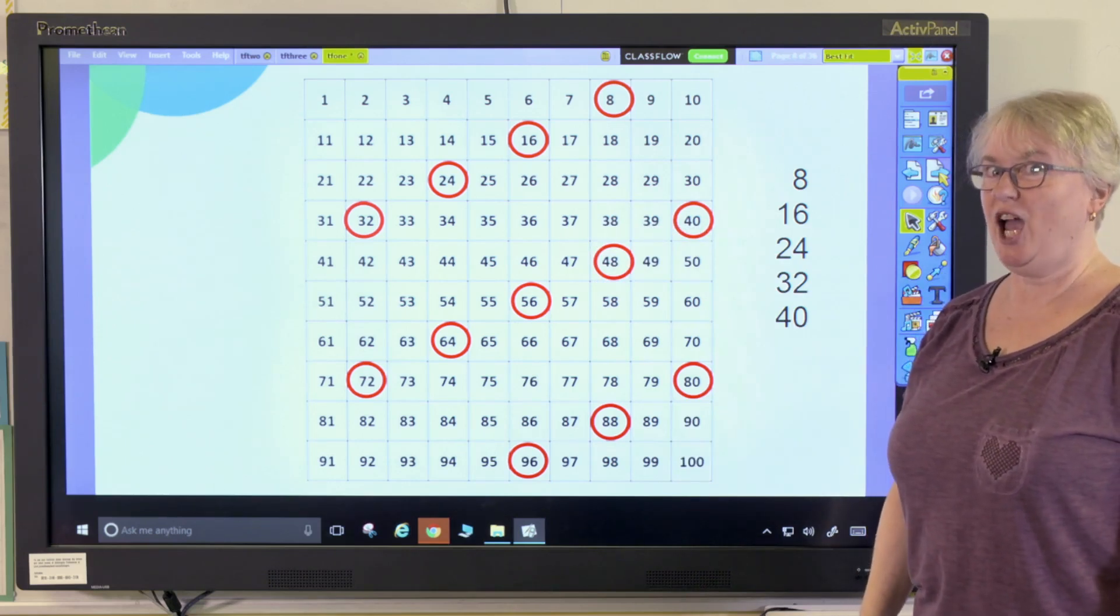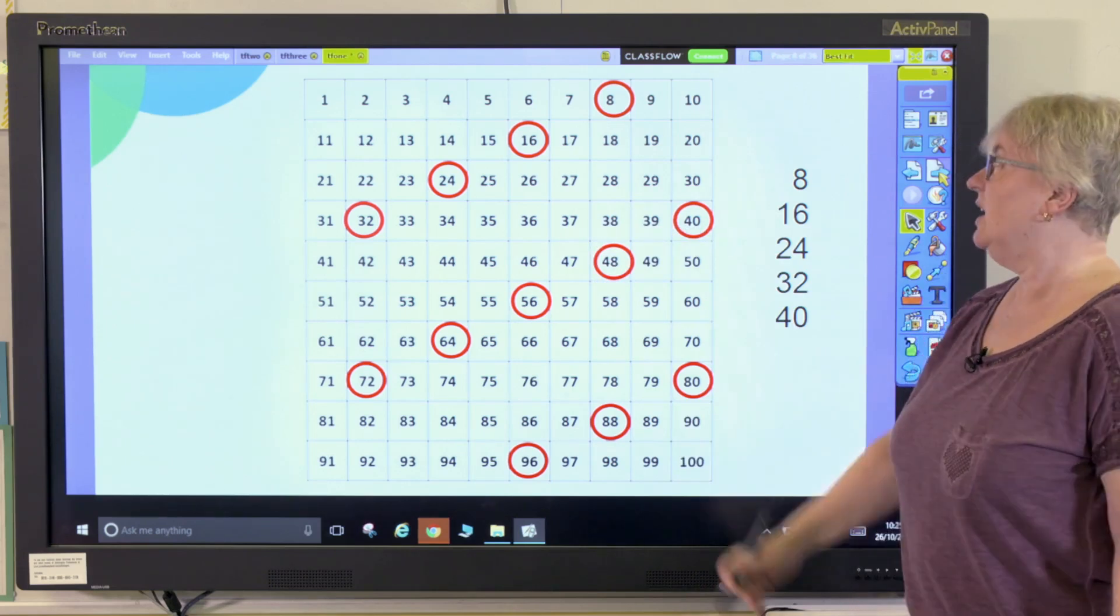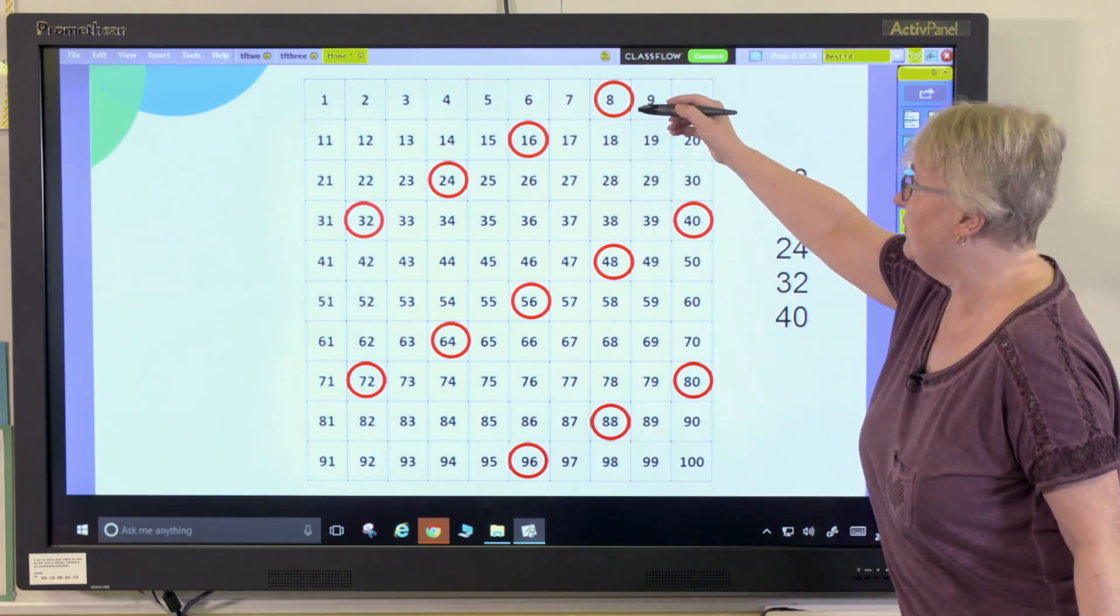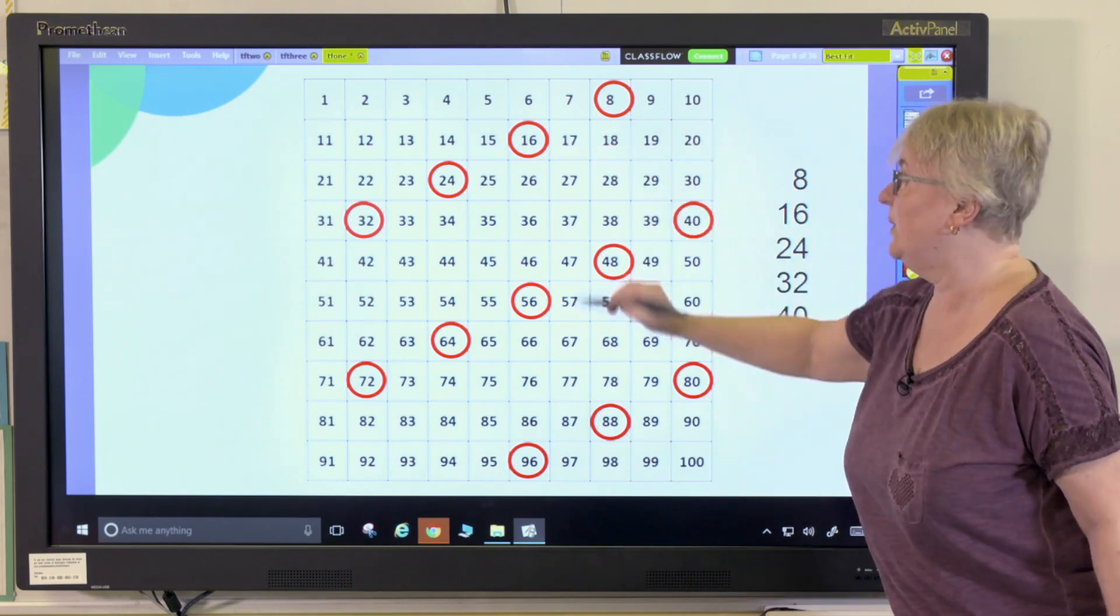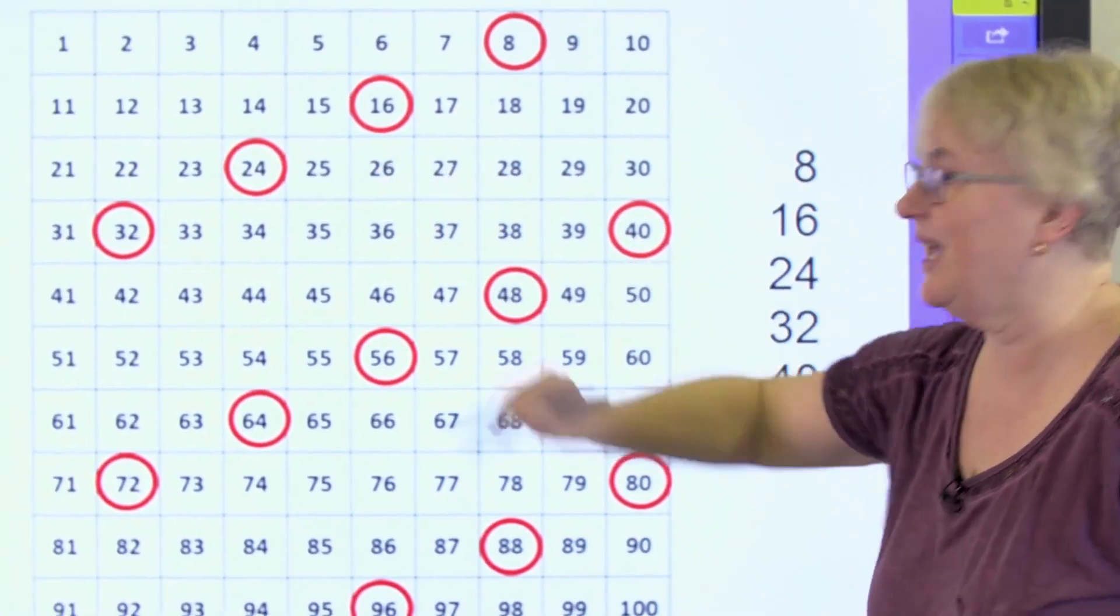Now if you get really clever at using a hundred square you can spot that to work out the next one in the pattern you have to add on ten and take away two. Add on ten take away two.